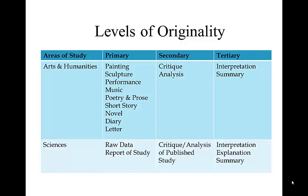In the sciences, the primary sources are raw data such as records of experiments and the results written in a report by the person who conducted the research, often published in the professional literature for their field of study. These primary sources are often critiqued and analyzed by others in that profession and published as secondary sources. Many times, someone unaffiliated with the research explains the research study to the general public through the news media and other popular literature, and these interpretations, explanations, and summaries are published in tertiary sources.